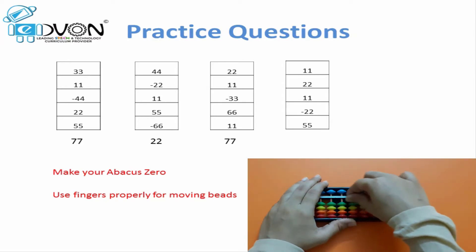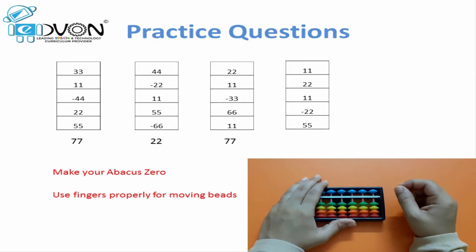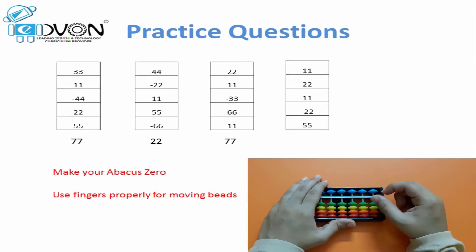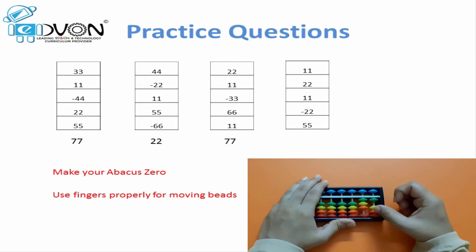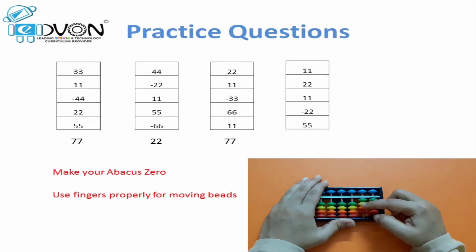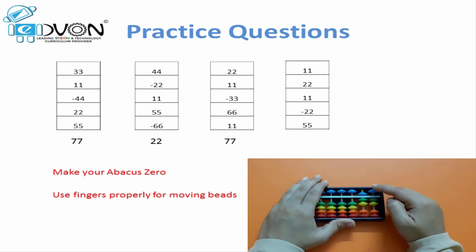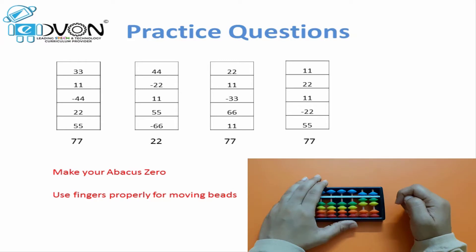Zero. Next question: 11 plus 22 plus 11 minus 22 plus 55. Answer is 77.